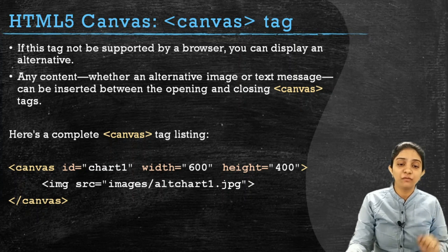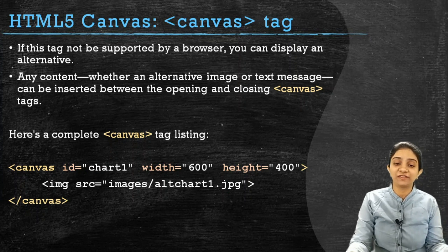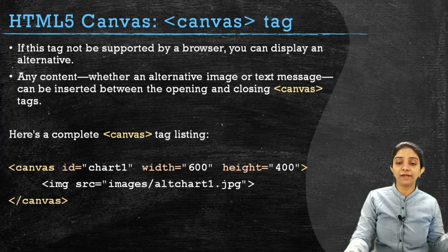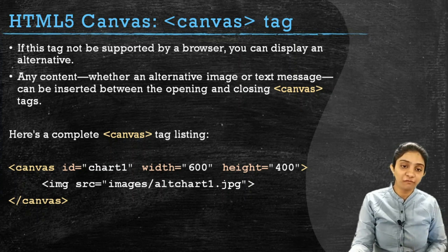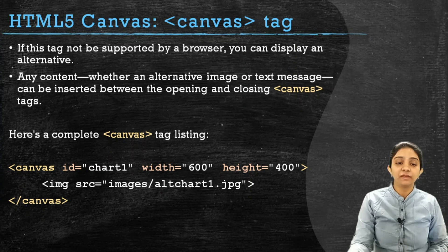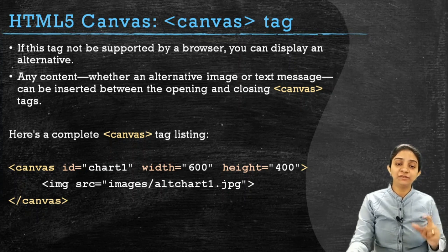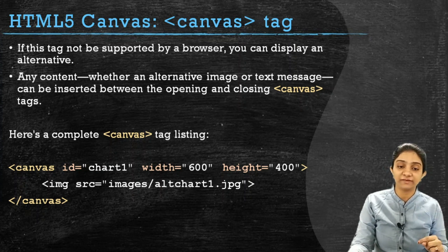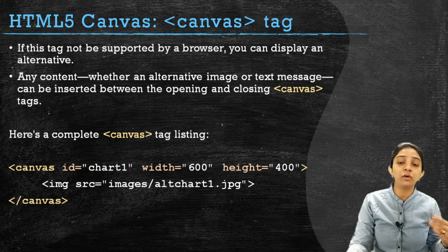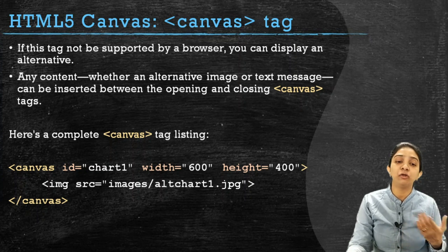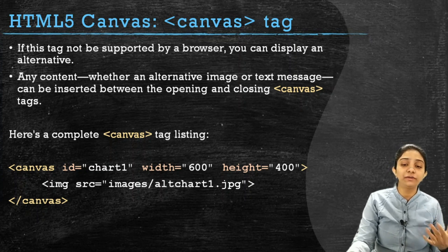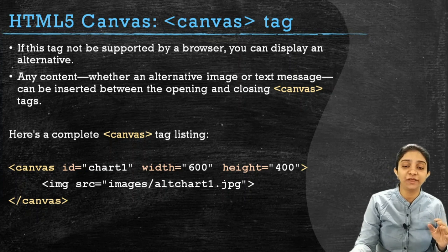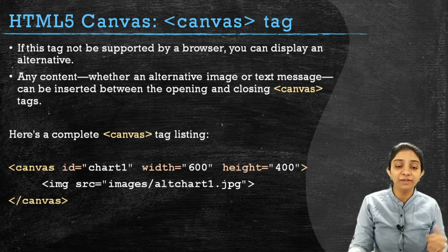The canvas tag has an opening canvas tag with the id attribute as 'chart1', width attribute as 600 pixels, and height attribute as 400 pixels, followed by the closing tag of canvas. Between the opening and closing tag, we can show an alternate image or alternate text. In this particular example, an alternate image showing some chart is depicted.